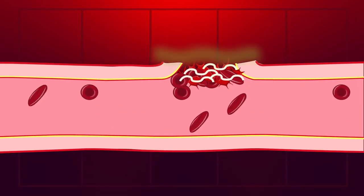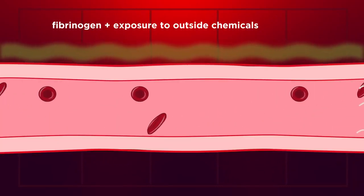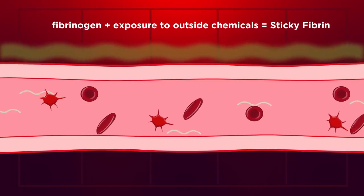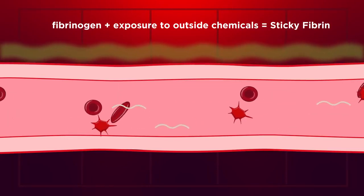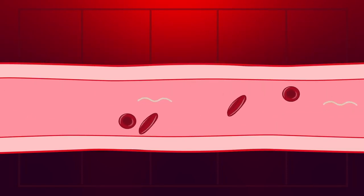A final thing to note. Remember that I said the exposure to the collagen causes the platelets to stick together, and the exposure to the outside chemicals causes the fibrinogen to turn into sticky fibrin. Both the platelets and the fibrin only become sticky after the exposure. This means, in a normal, healthy blood vessel, they won't randomly cause clots.